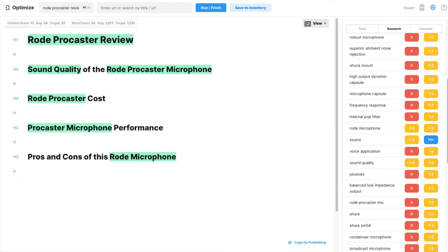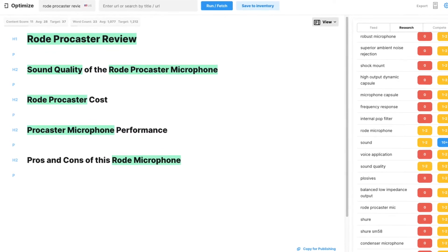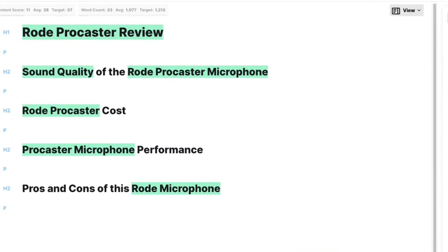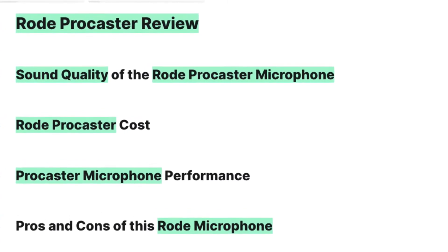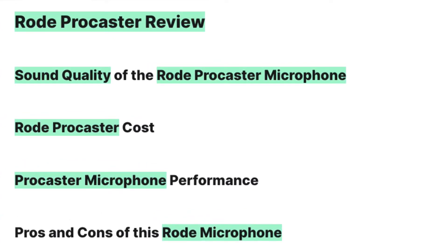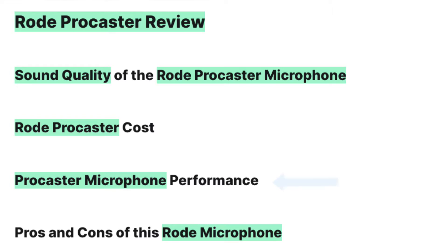Let's get them into Optimize. If you prefer, you could build the article in your favorite text editor and then copy and paste it into Optimize to check that it meets the target content score and word count. You may notice that I've elaborated a little bit on those subheadings. For example, I'm not just using 'sound quality' — I'm writing 'sound quality of the Rode Procaster microphone.' And instead of 'cost,' I'm using 'Rode Procaster cost.' For performance, I'm using 'Procaster microphone performance,' and for pros and cons, it's 'pros and cons of this Rode microphone.'